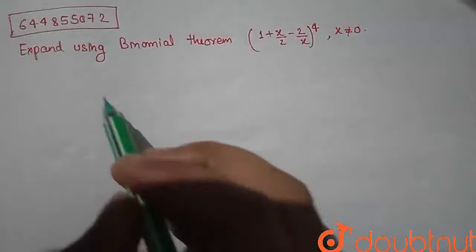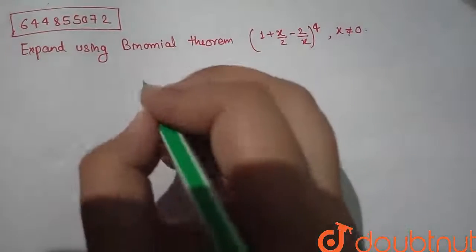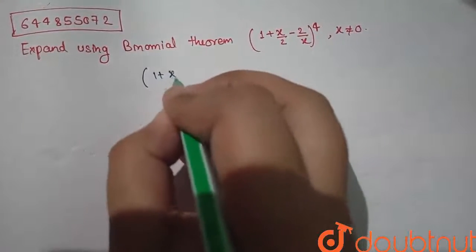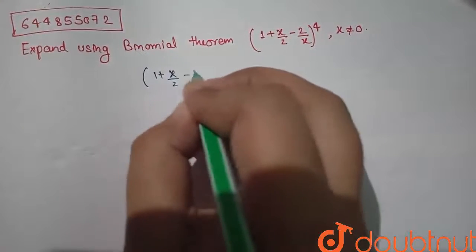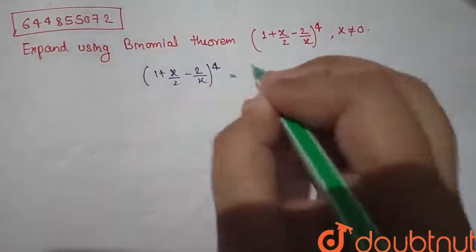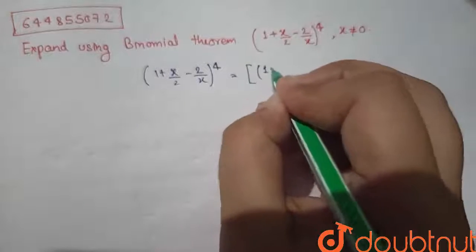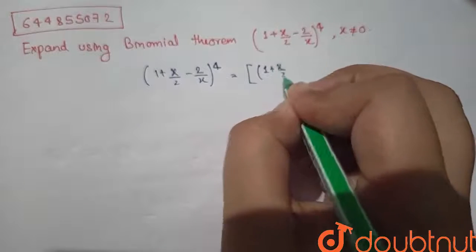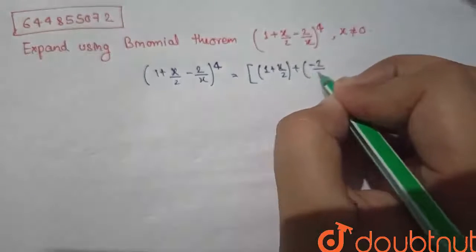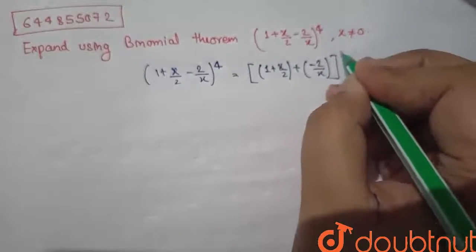In this question we have to expand this term using the binomial theorem. Our term is (1 + x/2 - 2/x) to the power 4. We can write it as (1 + x/2) as a single term, plus (-2/x), whole to the power 4.